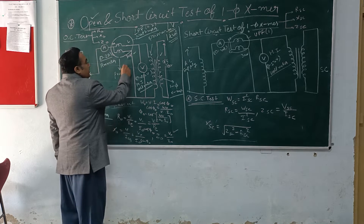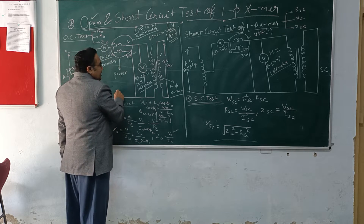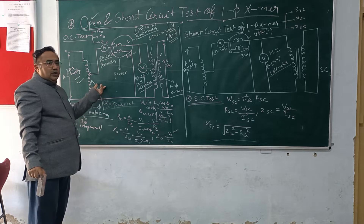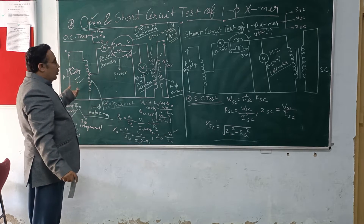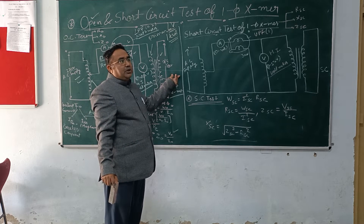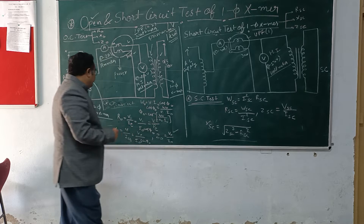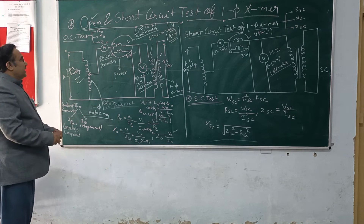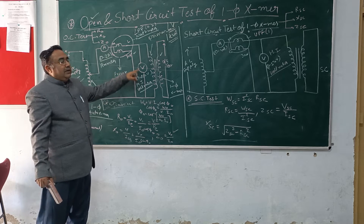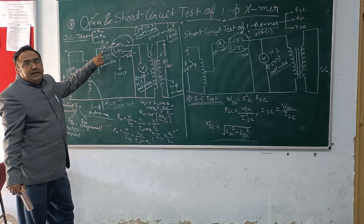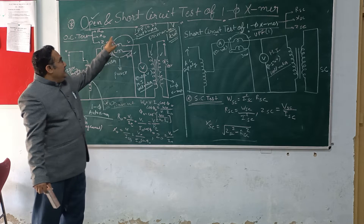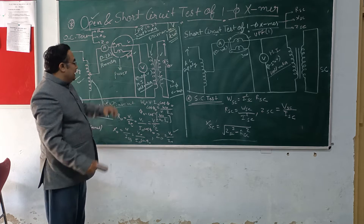Therefore, we always perform this open circuit test on the low voltage side. The low voltage side is being fed through a primary source - through autotransformer - and the high voltage side, or the secondary side, is kept open. Now we will take some readings. We will take the rated voltage reading with the help of this voltmeter - how much current flows when rated voltage is applied to the primary winding, that we will know from the ammeter, and the wattmeter will give us the power reading.